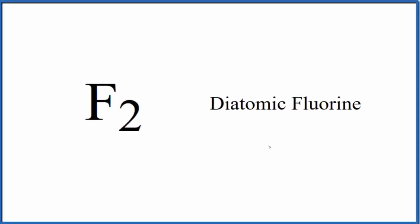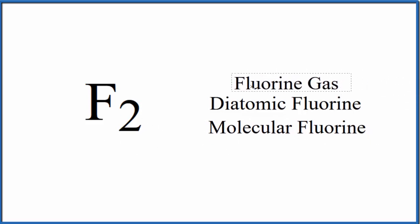In this video, we'll write the Lewis structure for diatomic fluorine. Diatomic fluorine is F2. It's also called molecular fluorine because we have a molecule, two fluorine atoms bonded together, and quite often you'll see it as fluorine gas. This might be the more common name that you're used to.